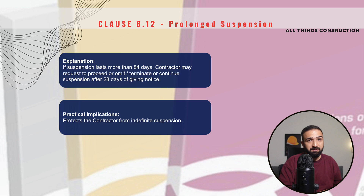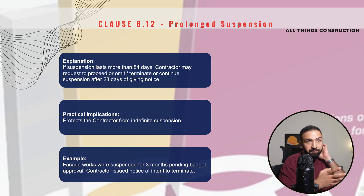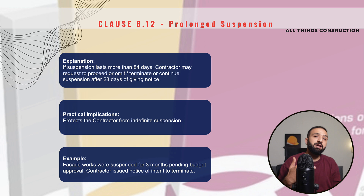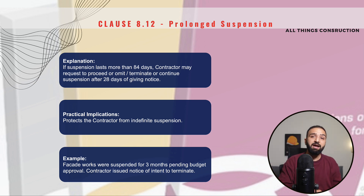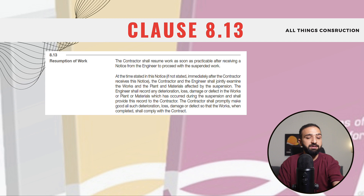This is a fairly important clause — it is meant to protect us contractors. For example, if we were doing facade works in a building and those works were suspended for three months due to employer budget issues, we contractors will issue a notice to terminate. We will tell the employer and the engineer that we will build the building, but we don't want to do these facade works anymore as a result of suspension under clause 8.12.